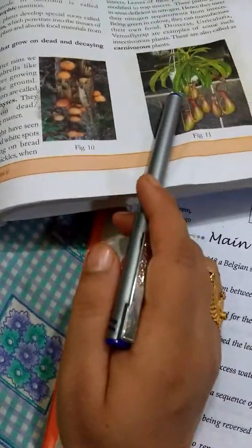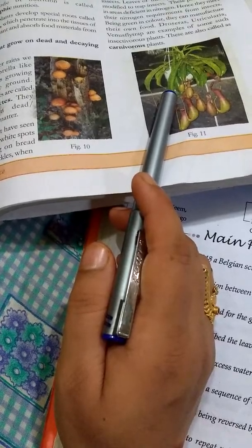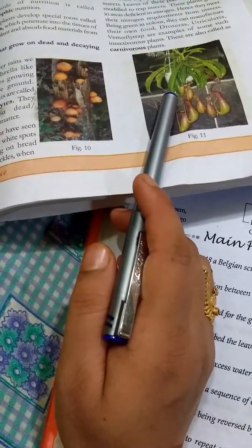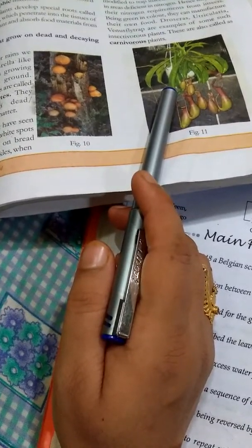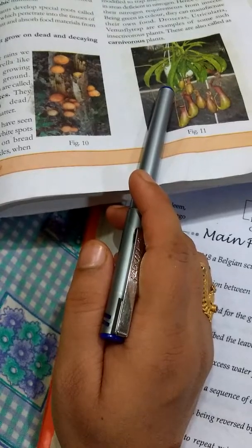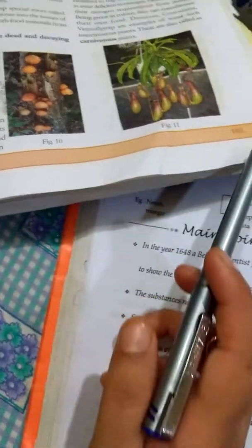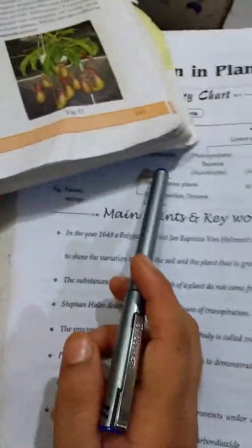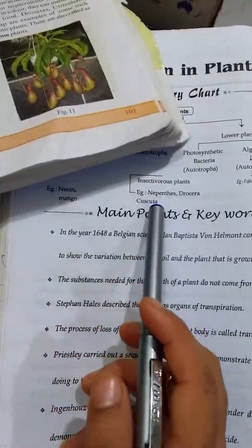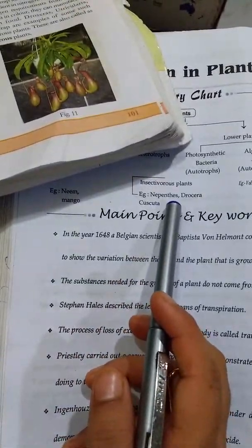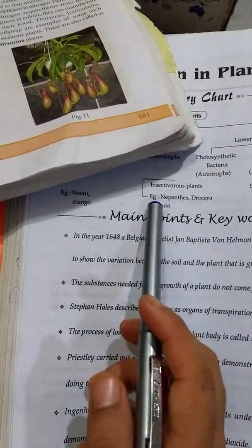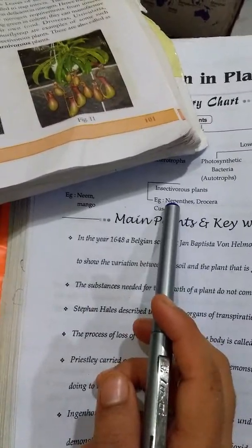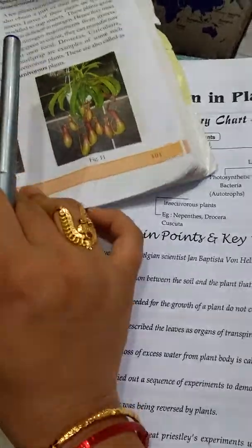The insectivorous plants — examples of insectivorous plants — include Nepenthes, Drosera, and Cuscuta. These are all examples of insectivorous plants.